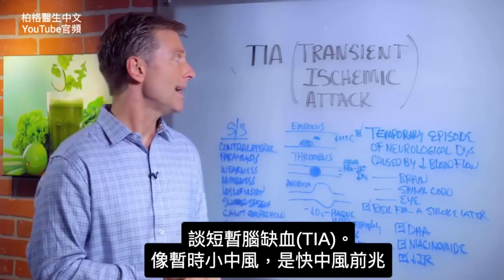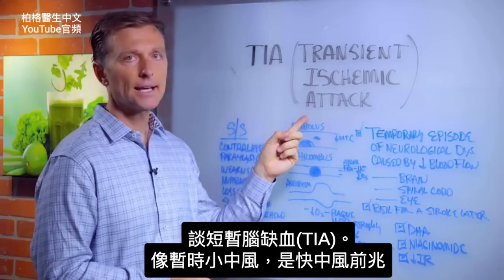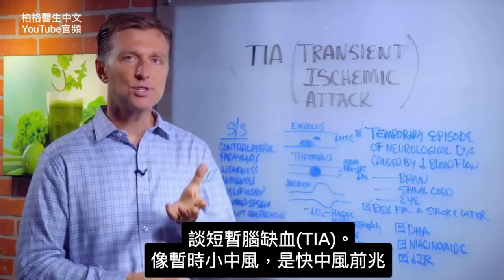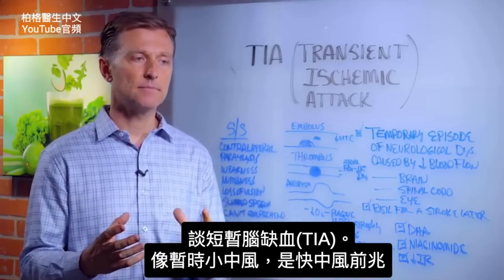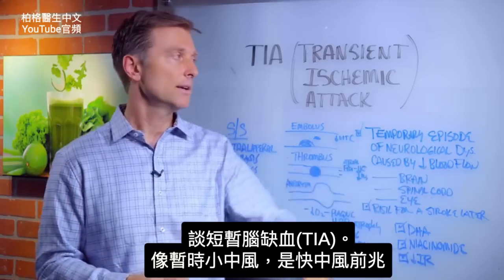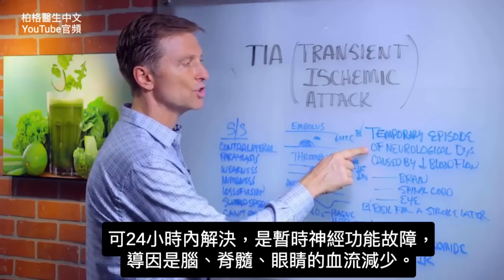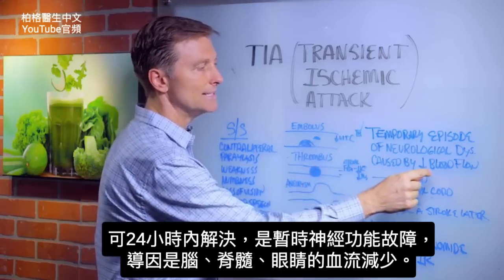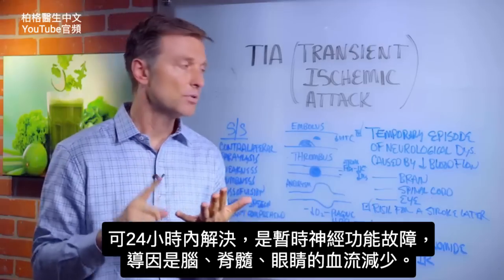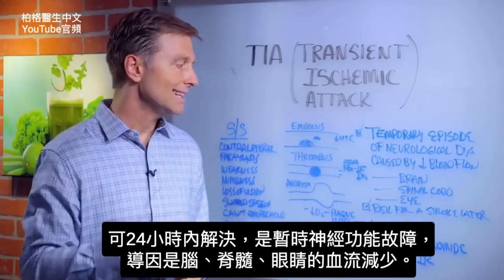In this video I want to talk about TIA, transient ischemic attack. This is kind of like a mini stroke that's temporary, that tells you that there's a stroke coming. It's a temporary episode of neurological dysfunction caused by decreased blood flow of the brain, spinal cord, or even in the eye.